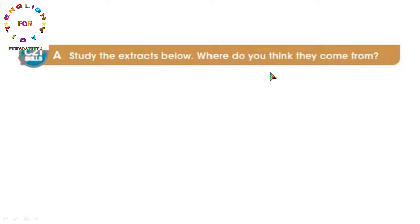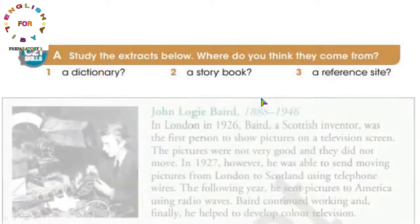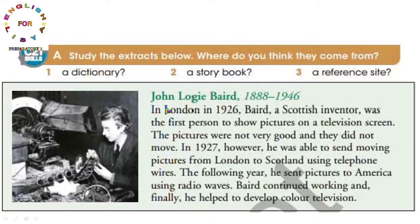عندنا مقتطفات نقرأها، إما من قاموس أو من كتاب قصة أو من موقع مراجع فيه معلومات. نشوف النص الأول: جون لوجي بيرد، اسم شخص، 1888 إلى 1946، هذه سنة ميلاده ووفاته. في لندن في عام 1926.